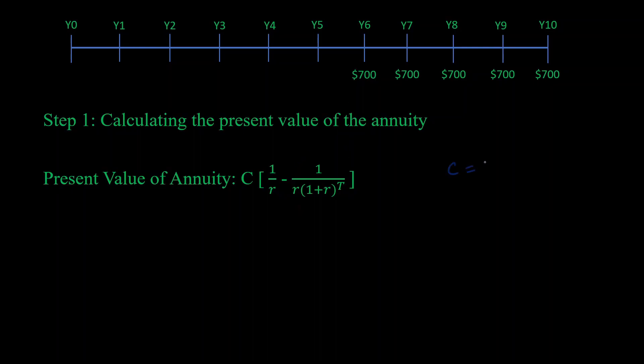Let's plug it all in: we get 700 × [1/0.1 - 1/(0.1 × (1.1)^5)]. Do all the math, and the present value of this annuity equals $2,653.55.